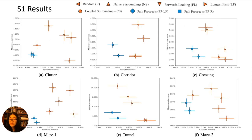These are the results of S1. Each scatterplot is for a different map and each point shows a different heuristic. The y-axis shows the percentage makespan increase over the ideal makespan — that is, the makespan if we took each robot's optimal path and ignored collisions. The x-axis shows the percentage flow time increase.